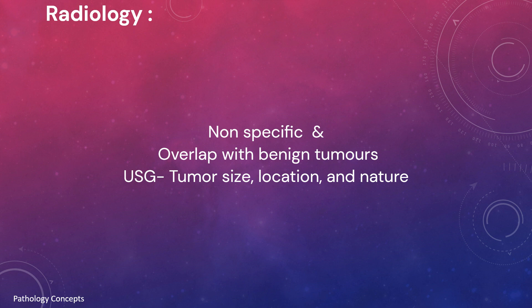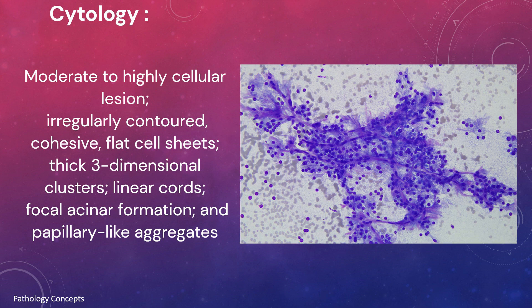Tumor size, location, and nature can be determined by ultrasound. Cytology shows moderate to highly cellular lesions, and the architectural variations include irregularly contoured cohesive flat cell sheets, thick three-dimensional clusters, linear cords, focal acinar formation, and papillary-like aggregates.